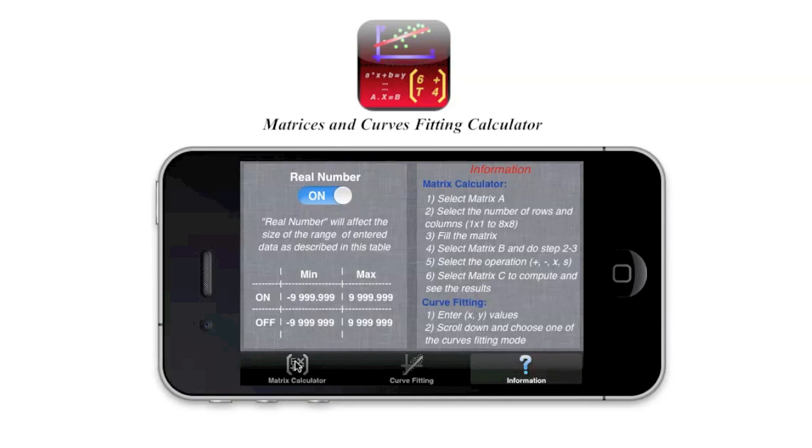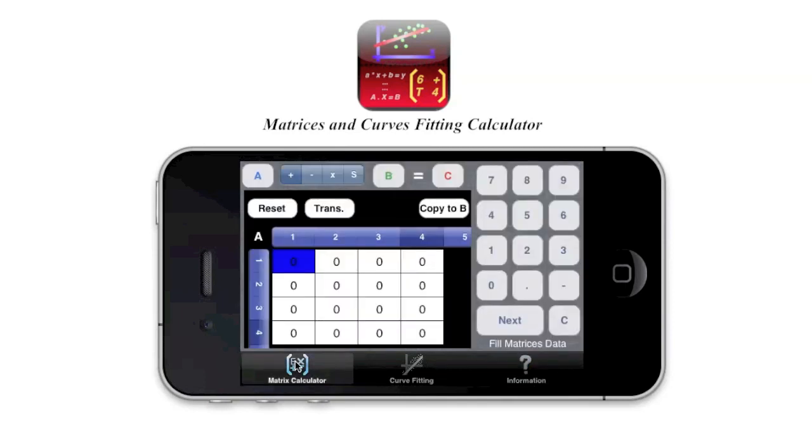So let's start first with the matrix calculation. So in the center pane you have here the numbers that you want to put, you have the decimal point, the minus, and you can cancel and reset any data here. And this is next, basically to move to any cells. So you can choose the cells like that from your fingers directly or you can just do a next.